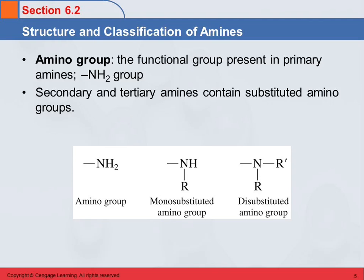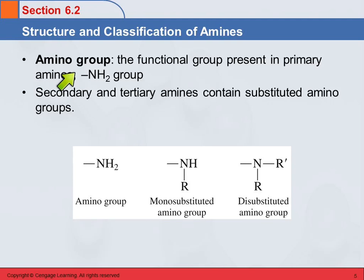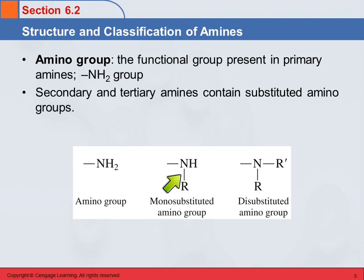The amino group is the functional group present in primary amines — that's NH2. Primary amines have some R group attached to NH2. Secondary and tertiary amines contain amino groups that have been substituted: a monosubstituted amino group or a disubstituted amino group.